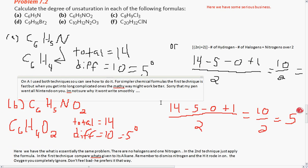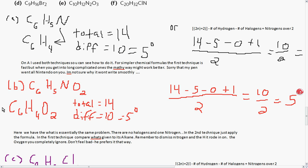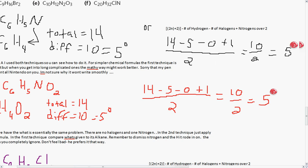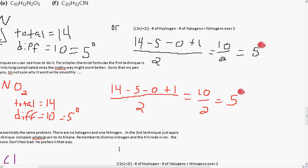In B, you have a C6, so it's very similar. And here we have what is essentially the same problem. There are no halogens and one nitrogen. In the second technique, just apply the formula. In the first technique, compare what's given to its alkane. Remember to dismiss the nitrogen and the H it rode in on. The oxygen you completely ignore. There you can see the math on how to do it in the formula. Just plug in the N, chug away.